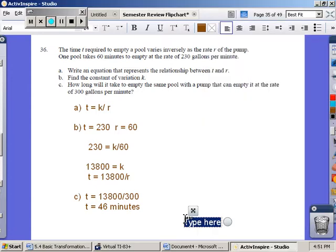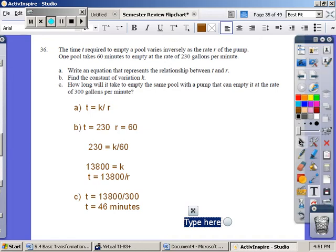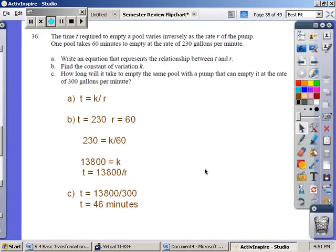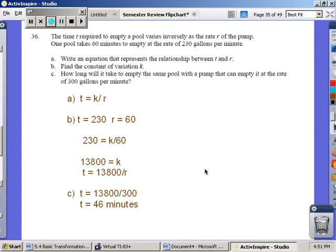Letter C. How many gallons will it take to empty the same pool with a pump that can empty it at the rate of 300 gallons per minute? Remember the equation is letter A. T equals K divided by R. We found the constant, which is 13,800.